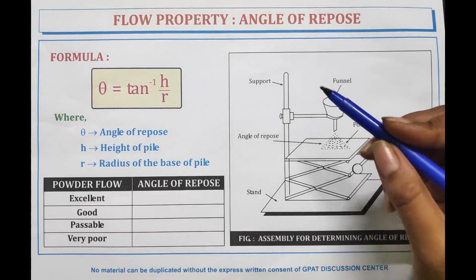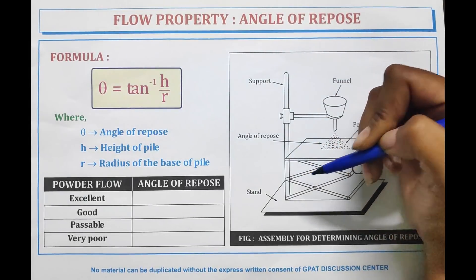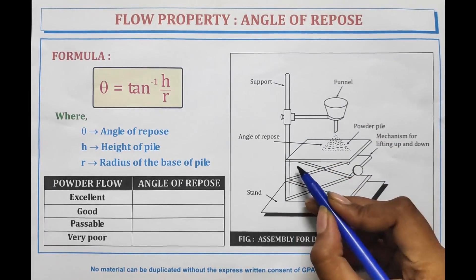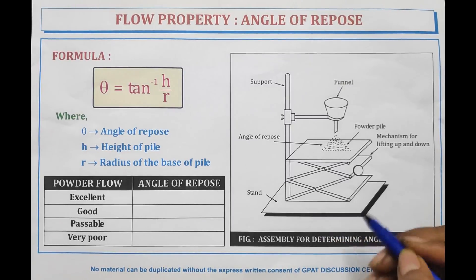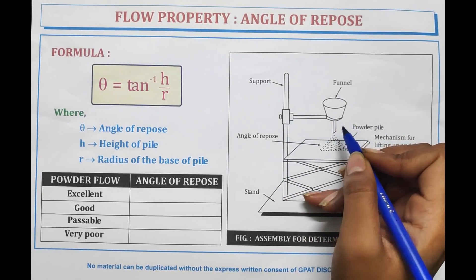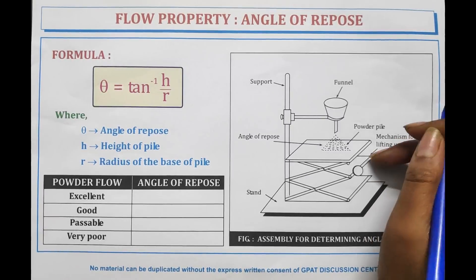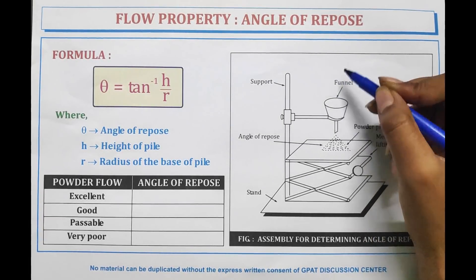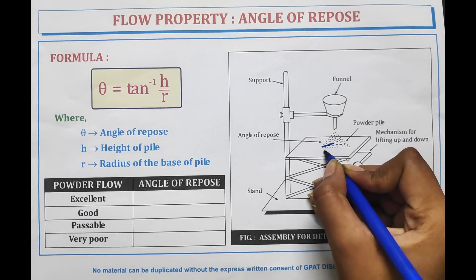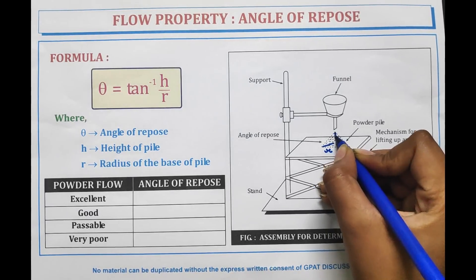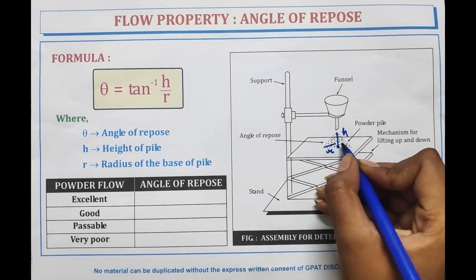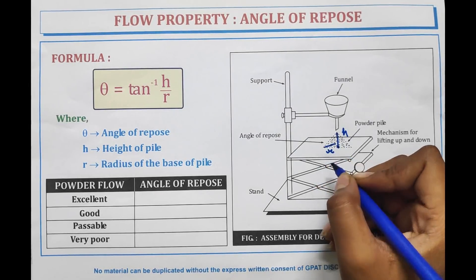In this method, a support is there from which a stand is connected and a stool-like structure is made, which is the mechanism for lifting up and down the surface. From the top, a funnel is attached at a specific distance. Powder is put into the funnel and flows through it, forming a pile-like structure. We then measure the radius of the pile and the height of the powder pile.